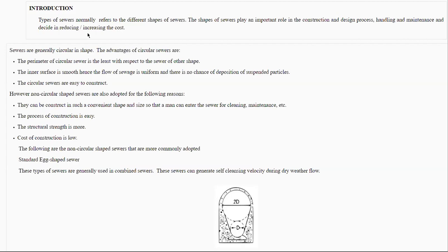The construction can be such that a person can enter the sewer for cleaning and maintenance, similar to the purpose of manholes — which are basically constructed for maintenance purposes. If the structural strength for any other sewer shape is greater, then we would use that shape. Apart from circular sewers, what sewers are generally adopted?